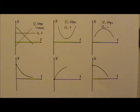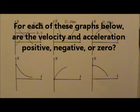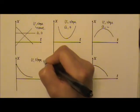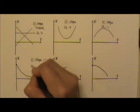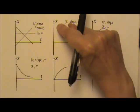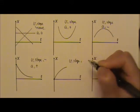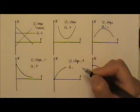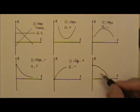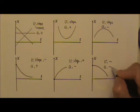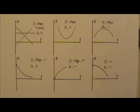Now take a look at these three graphs. See if you can figure out whether the velocity and acceleration are positive, negative, or zero for each. For the first one, since the slope is negative, the velocity is negative. The acceleration is positive because it's part of an upward curve. For the second one, the velocity is negative because it's part of a downward curve. For the third one, the velocity is negative because the slope is negative, and the acceleration is also negative because this graph is part of a downward curve.